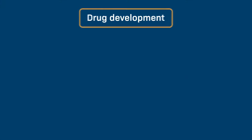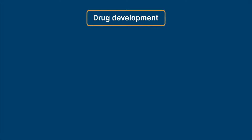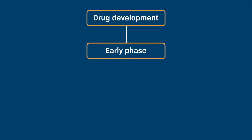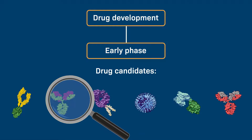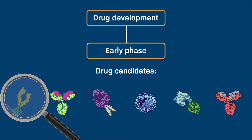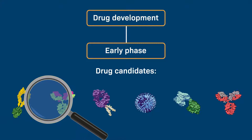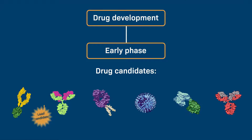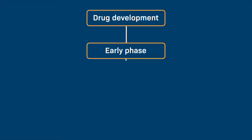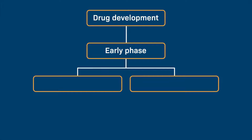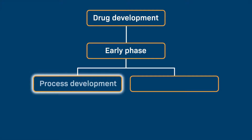Drug development is a multi-step process. The early phase of development is dedicated to identifying the lead, or the ideal drug candidate, out of a pool of many candidates. Once the lead candidate has been identified, the development process is divided into two parallel pathways. One of these pathways is called process development.